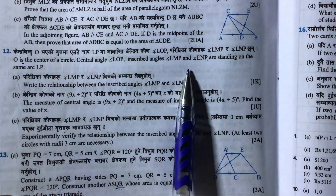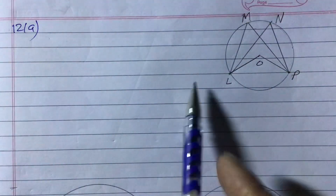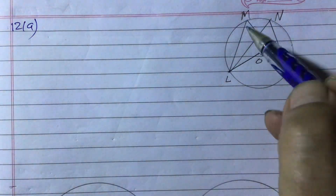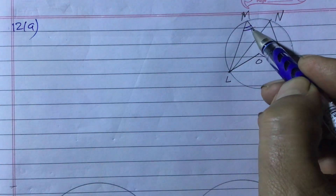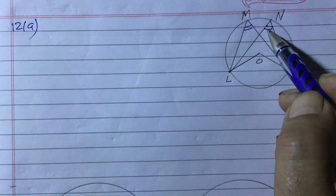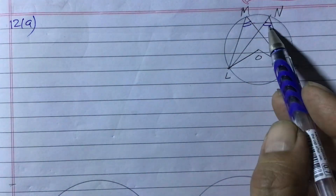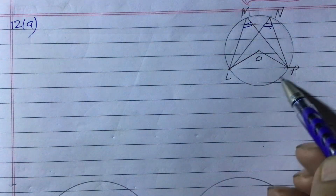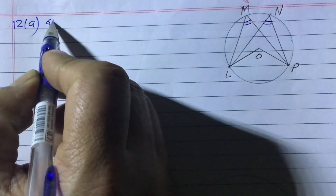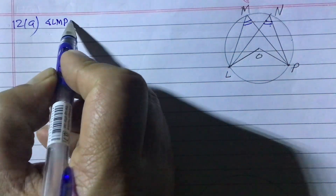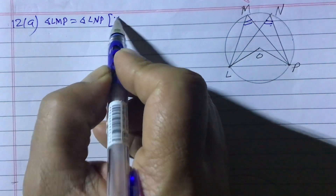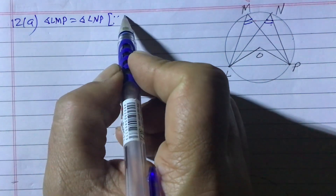I have already drawn this figure. Look here — this is inscribed angle LMP, and this is inscribed angle LNP. These two angles are standing on the same arc LP, so they are equal. We can write: angle LMP is equal to angle LNP.